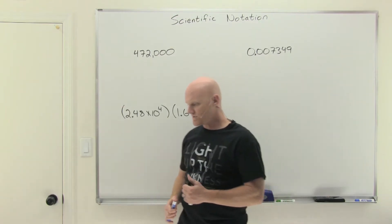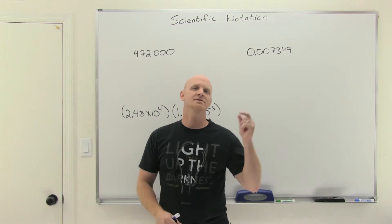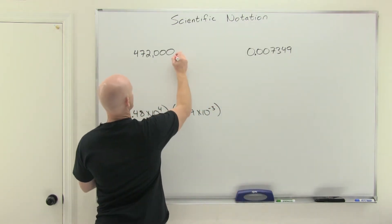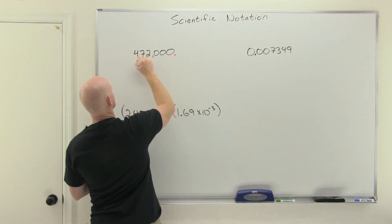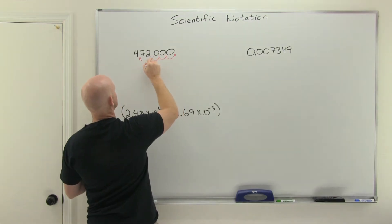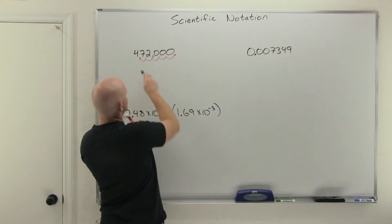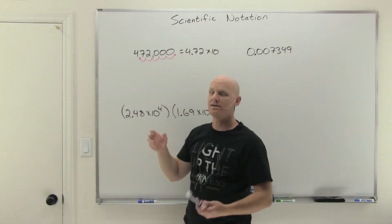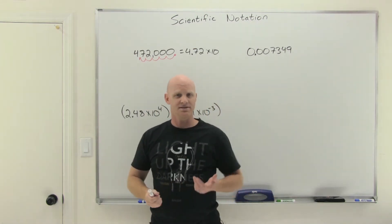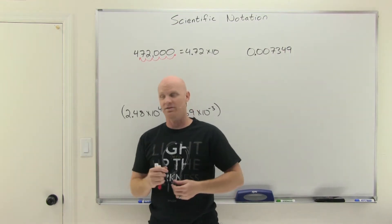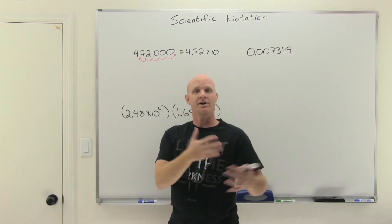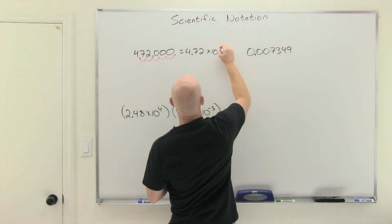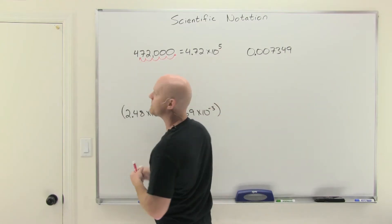There are rules for scientific notation: you always have exactly one digit to the left of your decimal. For example, take 472,000 — there's an implied decimal at the end, and we need to move it 1, 2, 3, 4, 5 places to get one digit left of the decimal, ending up with 4.72. We then multiply that by some power of 10. Because our decimal system is base 10, every decimal place moved is a power of 10. Since the number has an absolute value bigger than 1, it's a positive power — 10 to the positive 5th.